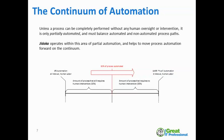Jidoka operates within the area of partial automation and helps move process automation forward on the continuum. Following that red arrow, at the 50% point you have a process where theoretically 50% could still be moved to technology or 50% could be moved back to a human employee. You're always managing that balance in your process management efforts: what is the optimized cost structure? How do I form a process that over time is most efficient — getting the most value for the least cost? Sometimes that's not all machines or all humans, and it can be complicated and non-intuitive.